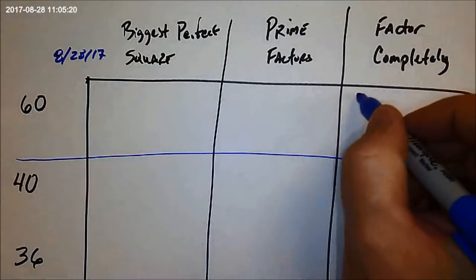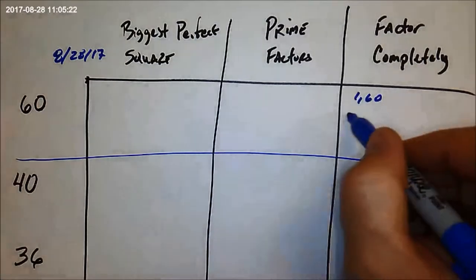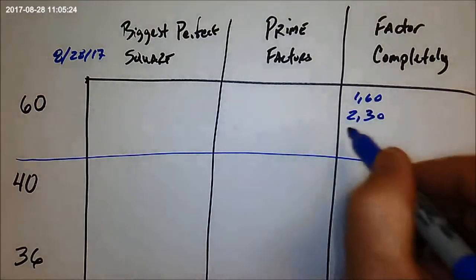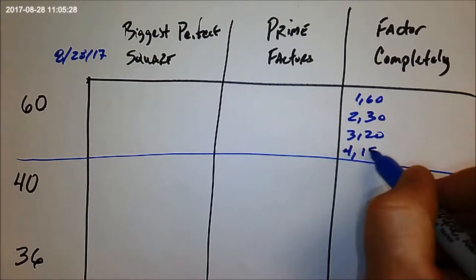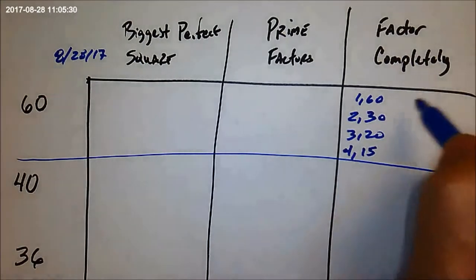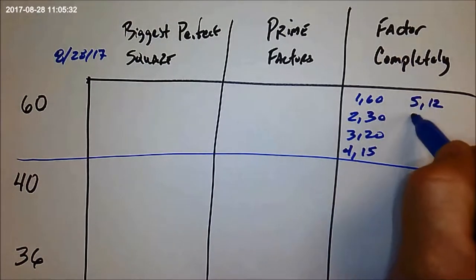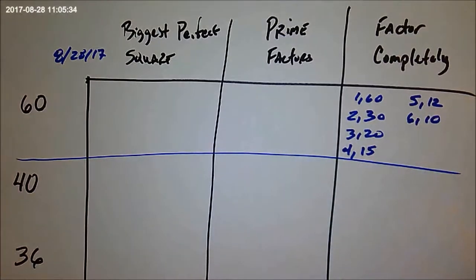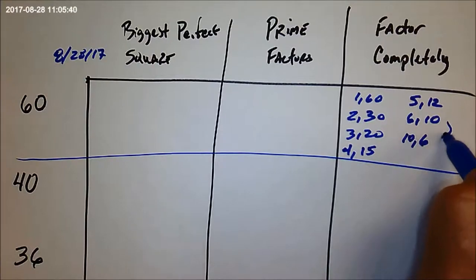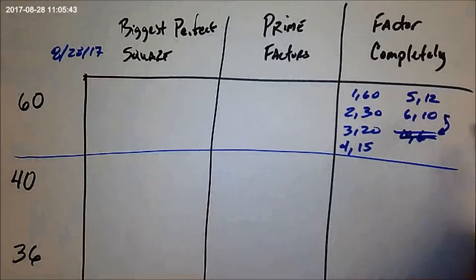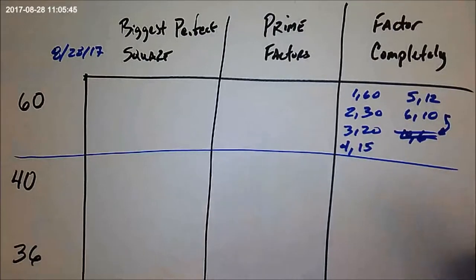Now factoring completely, let's see, one goes into 60 of course, and then two goes in 30 times, three goes in 20 times, four goes in 15, five goes in 12, six goes in 10, seven does not go in, eight doesn't go in, nine doesn't go in, but 10 does six times. Now you see how that switched around right there? That means you're done. So factor completely, that's all the things that multiply to 60.